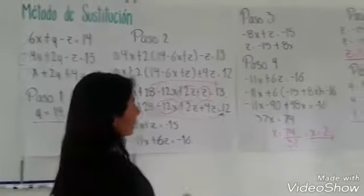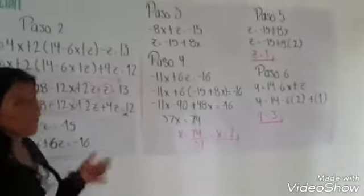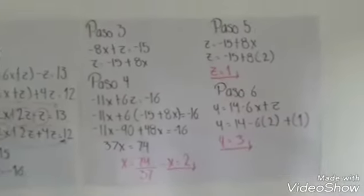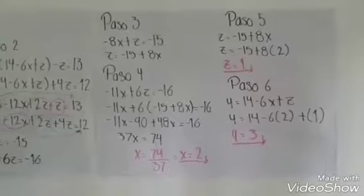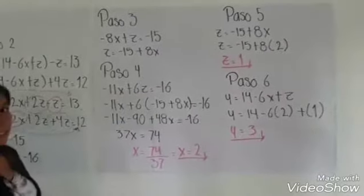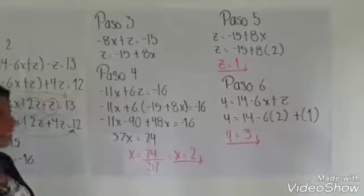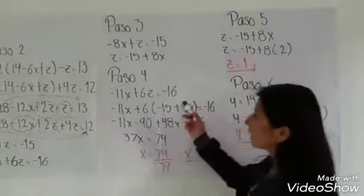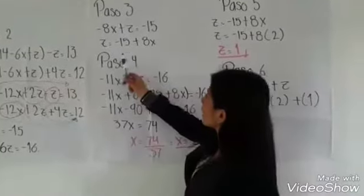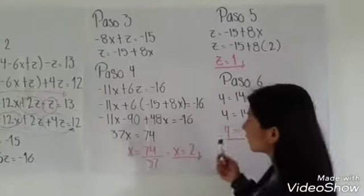El paso 3 es volver a despejar una de las incógnitas para poder buscar su solución. La que decidimos despejar es Z, y nos queda Z es igual a menos 15 más 8X.